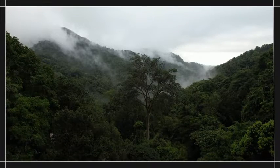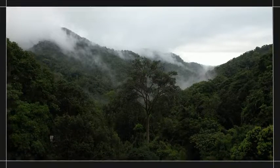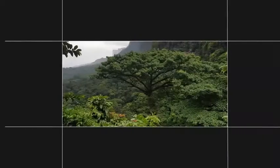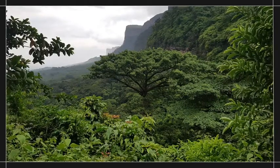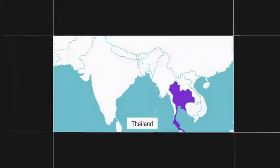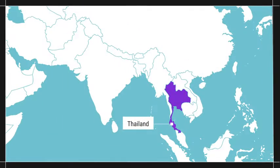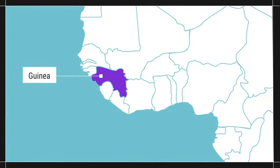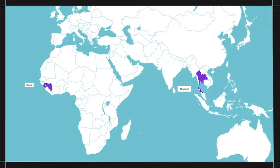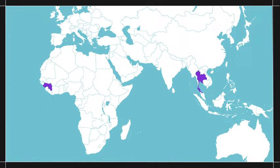Welcome to the rainforest — the tropical rainforest. This is also a tropical rainforest. They may look similar, but one is in Thailand and the other is in Guinea. Even though these rainforests are growing in distant and very different corners of the world, they're still part of the same biome. But what are biomes?